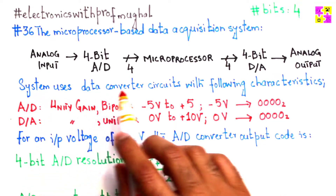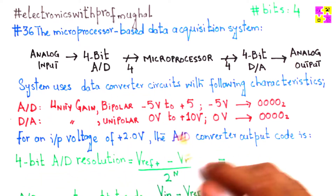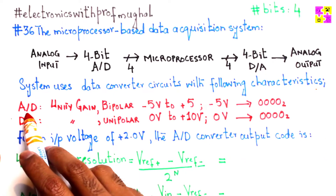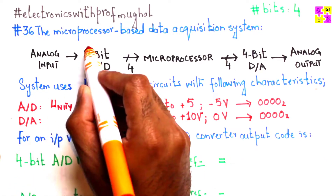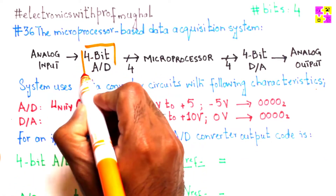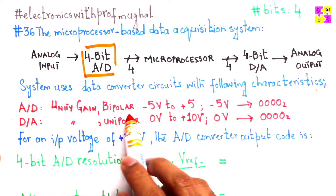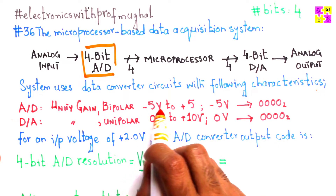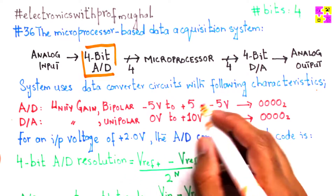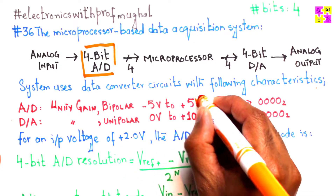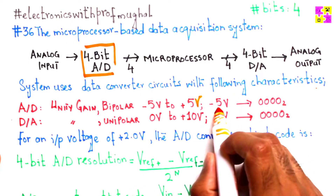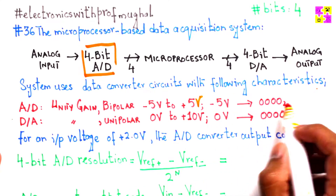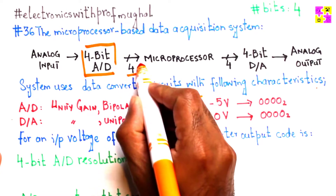The system uses data converter circuits with the following characteristics. The analog-to-digital converter, shown here, is a unity gain bipolar with a reference range between negative 5 volts and positive 5 volts, where negative 5 volts corresponds to 0000. Remember, this is a 4-bit system.